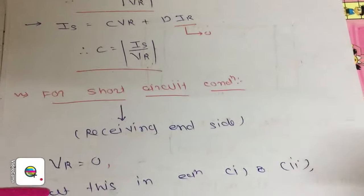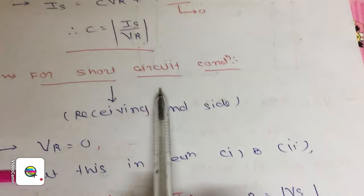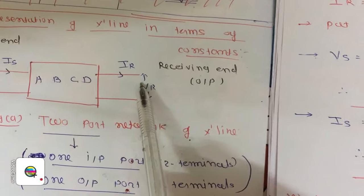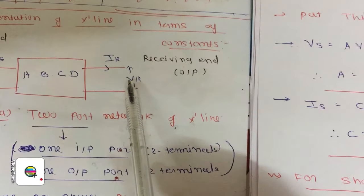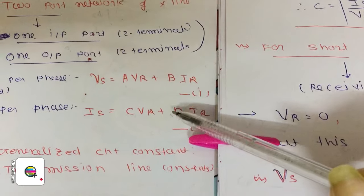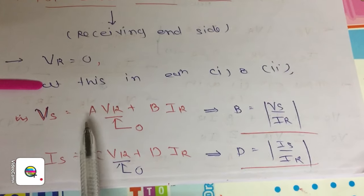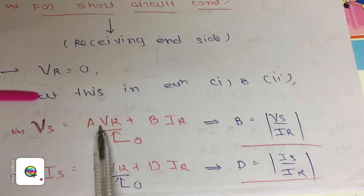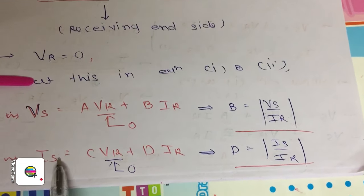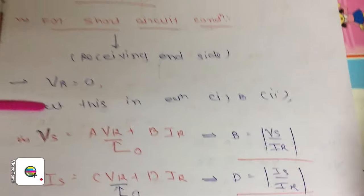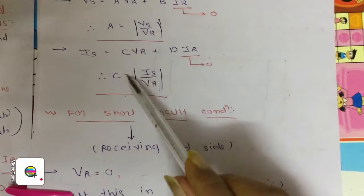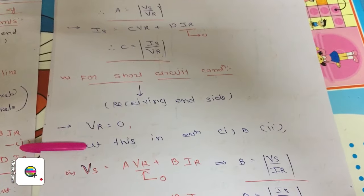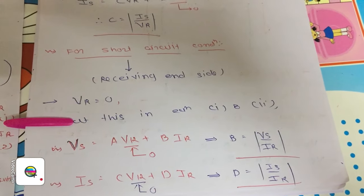Now we apply the second condition: the two-port network is short-circuited at the receiving end. In short-circuit condition, VR equals zero. Put VR equal to zero in both equations. In equation 1, the AVR term becomes zero, so B = VS/IR. In equation 2, the CVR term becomes zero, so D = IS/IR. We now have all four constants: A and C from open-circuit condition, and B and D from short-circuit condition.